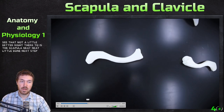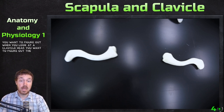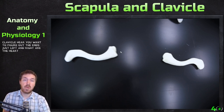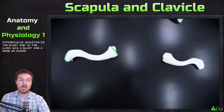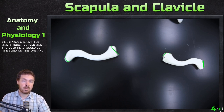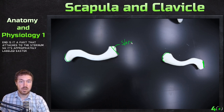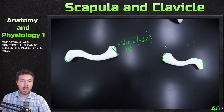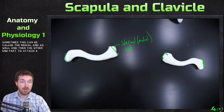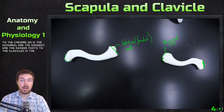Next up are the clavicles. The first thing you want to figure out when looking at a clavicle is the ends — left and right are the hardest parts of the appendicular skeleton. The clavicle has a blunt end and a more rounded end. The blunt end is the part that attaches to the sternum, so it's appropriately labeled the sternal end — sometimes called the medial end. The other end attaches to the acromion and is called the acromial end.